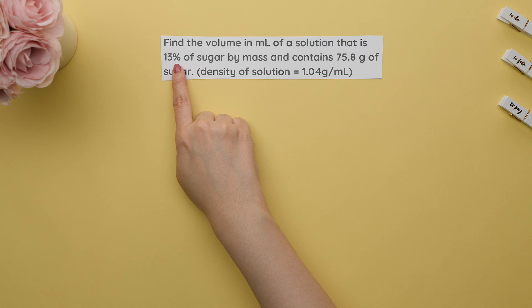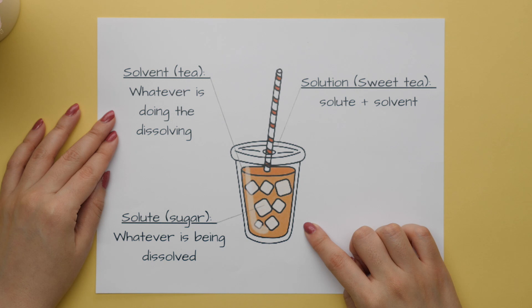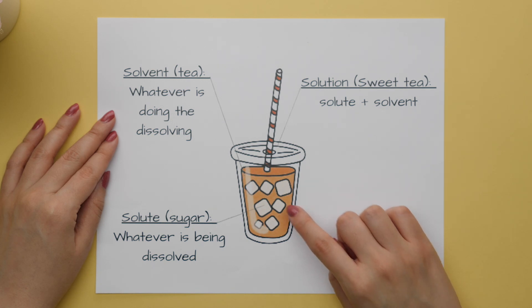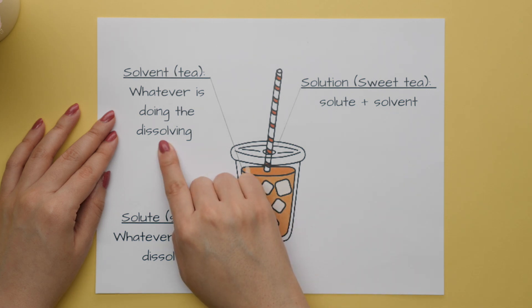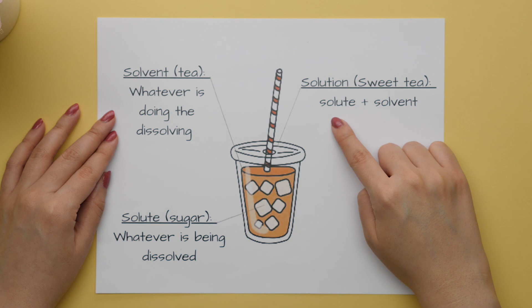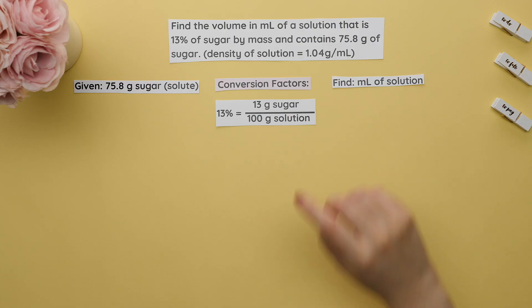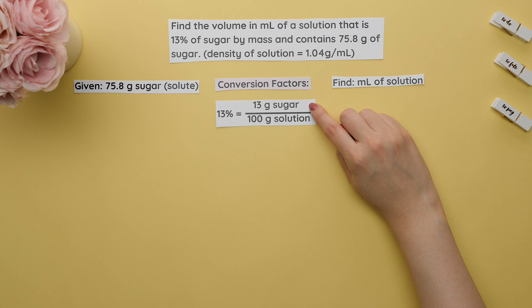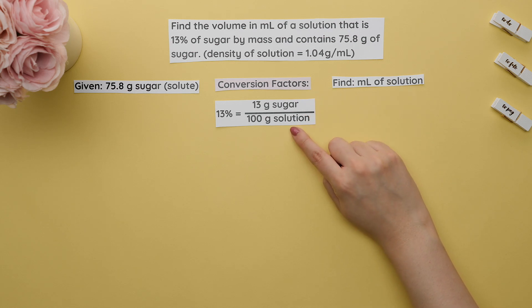We see the need to write percentages as fractions when talking about solutions, specifically solution stoichiometry. The mass percent of a solution is a little different from the mass percent of a compound. For the mass percent of a solution, you need to know what a solute and solvent are. For example, making sweet tea: the sugar is the solute — whatever is being dissolved — and the tea is the solvent — whatever is doing the dissolving. The solution is the solute plus the solvent. We can rewrite the mass percent of the solution as a fraction, where 13 represents the grams of solute in a 100-gram solution, acting as a conversion factor.